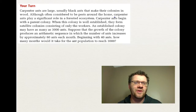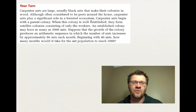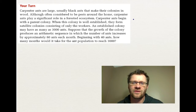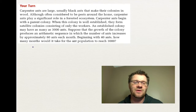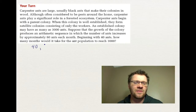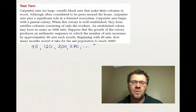Second example: Carpenter ants begin with a parent colony and form satellite colonies. An established colony may have as many as 3,000 ants. Suppose the colony's growth produces an arithmetic sequence where the number of ants increases by approximately 80 each month, beginning with 40 ants. The sequence would be: 40, 120, 200, 280, and so on up to 3,000. We want to find how many months it takes to reach 3,000.